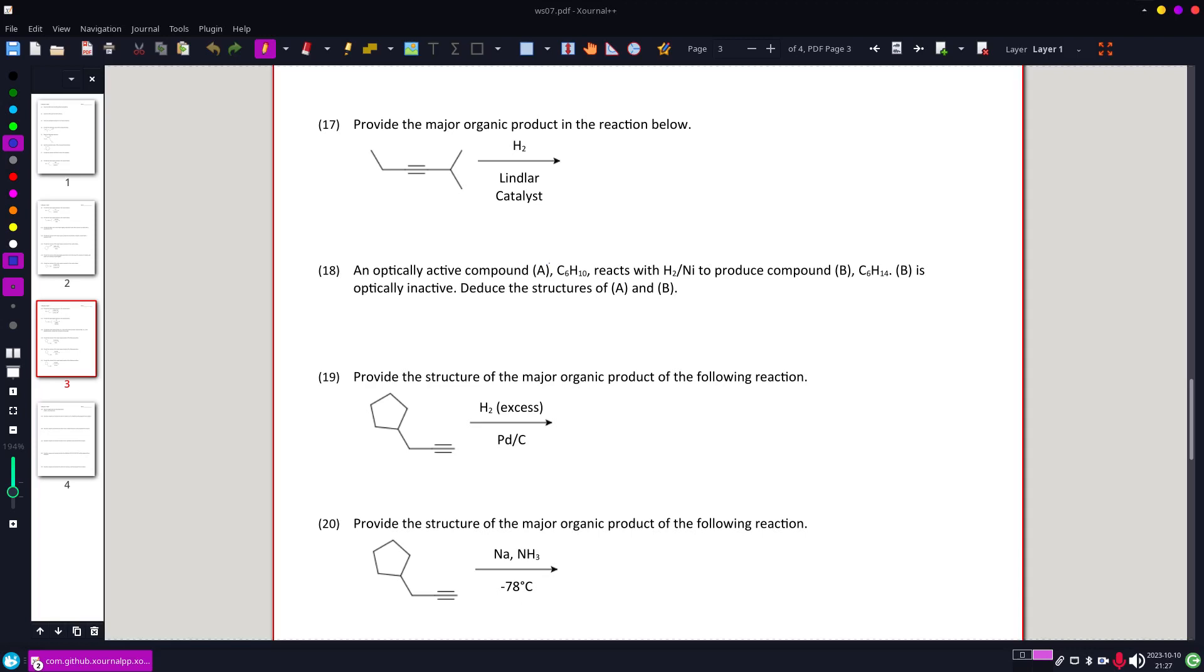Question 18. We're looking at an optically active compound with a formula C6H10 reacting with hydrogen with nickel to produce compound B, C6H14. We know that B is optically inactive. So we go from optically active to optically inactive. We want to use this information to deduce the structure of A and B.